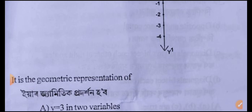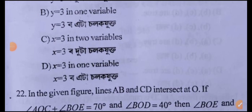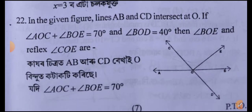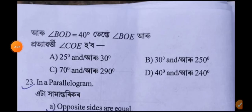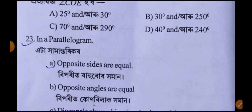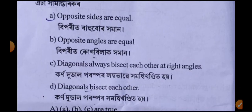Question number 21: option D. Option A, B, C, D — the option D. The option A. Next question number 22. Question number 23: option C.